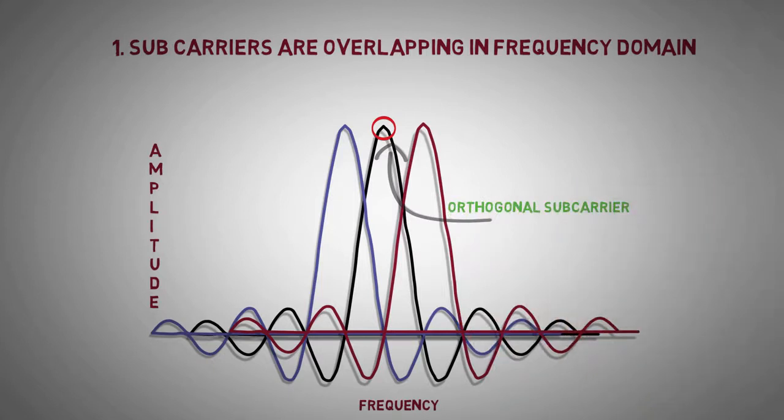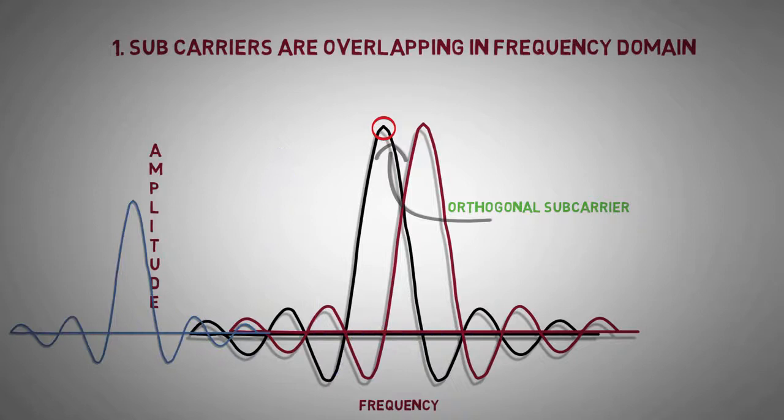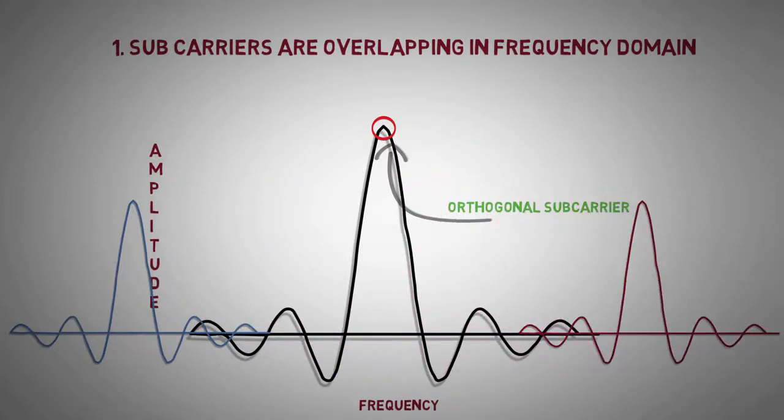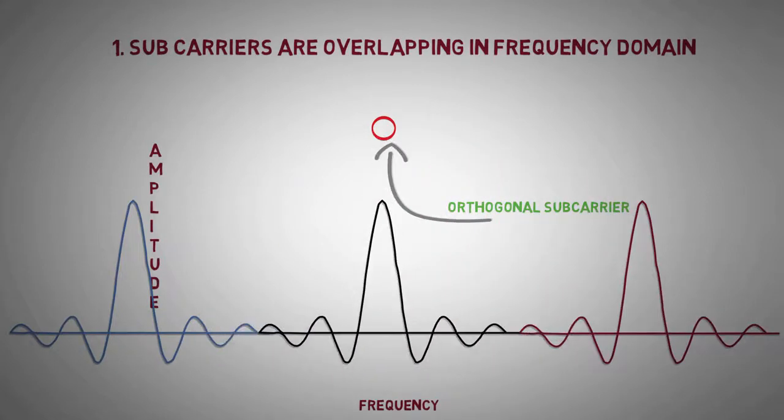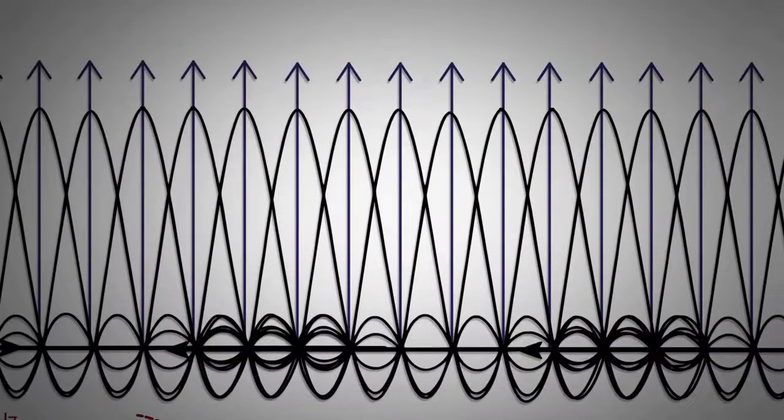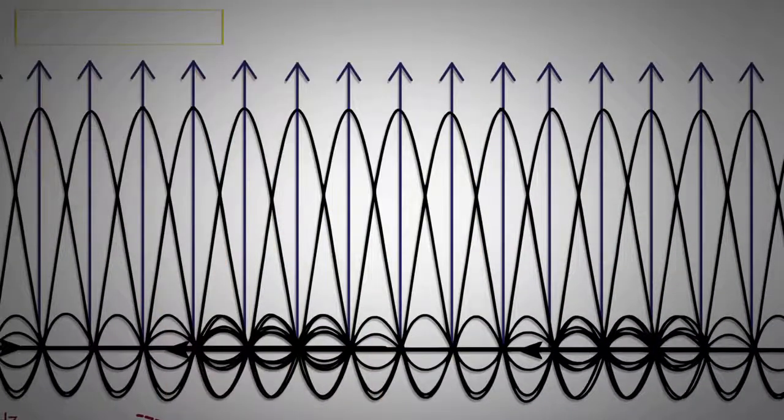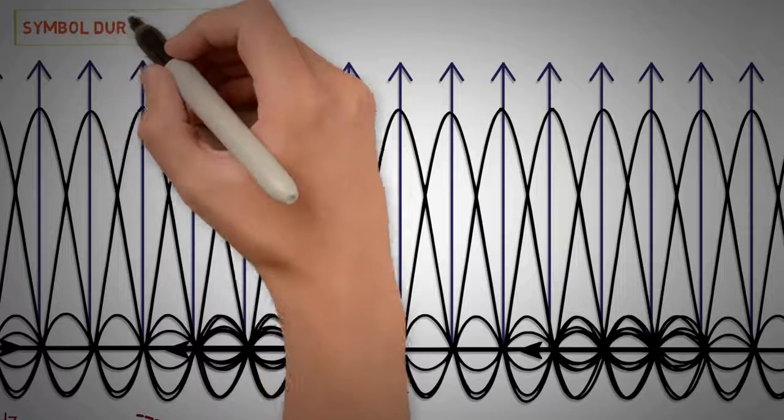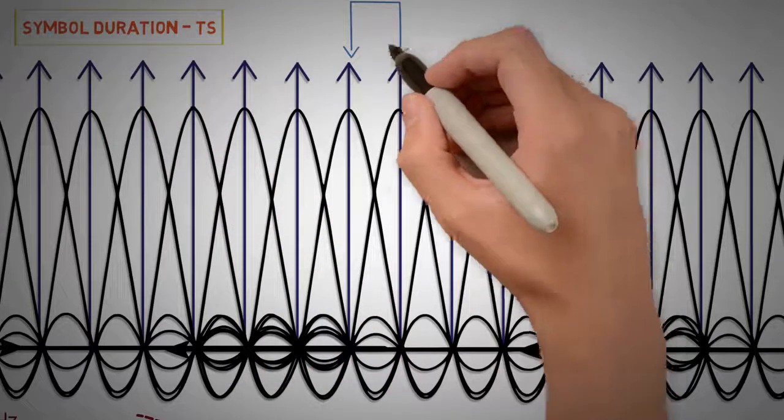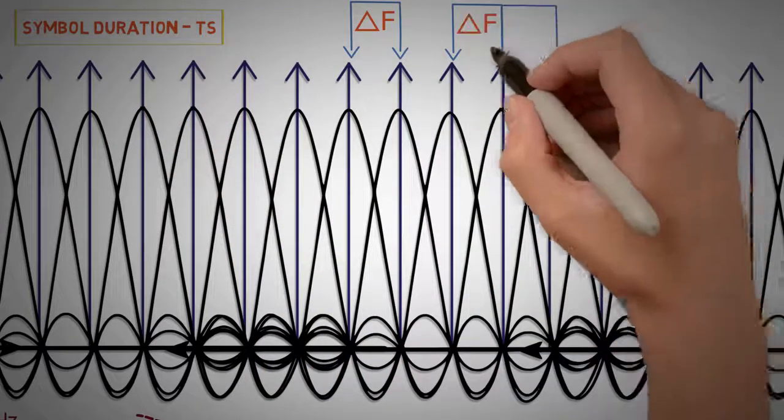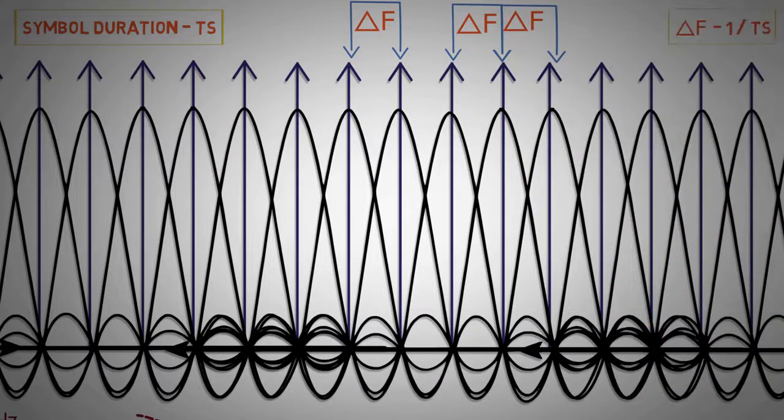As a result, a mobile can sample the frequency and phase without any interference from neighboring sub-carriers. Orthogonality is achieved by ensuring that all the sub-carriers have same symbol duration TS, and the sub-carrier spacing is maintained at delta F equal to 1 by TS.